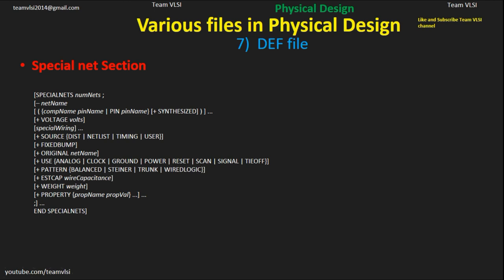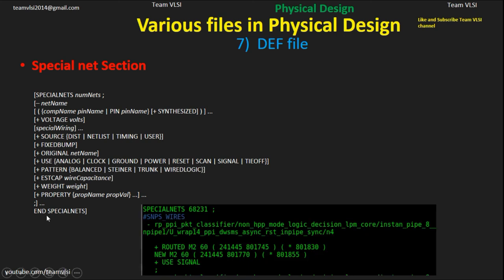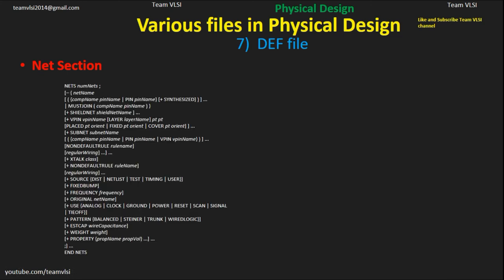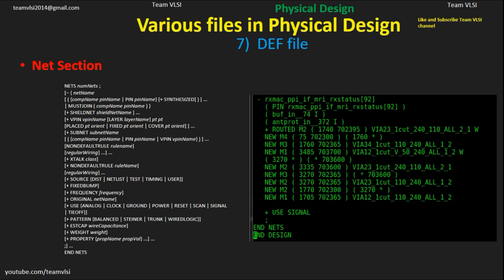Next is the special net section. This is the standard syntax of the special net section, and this is the actual section inside the DEF file — special nets are defined here. Then comes the net section, which has a standard format taken from the DEF language reference manual, and it contains the definitions of all the nets.